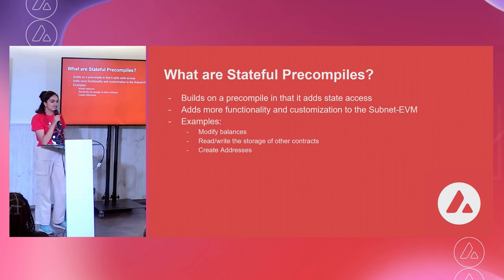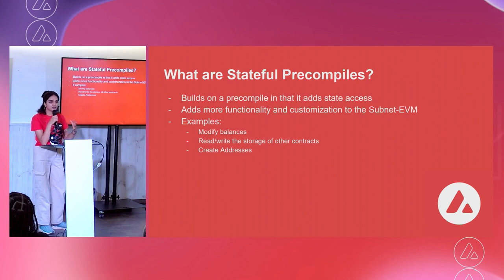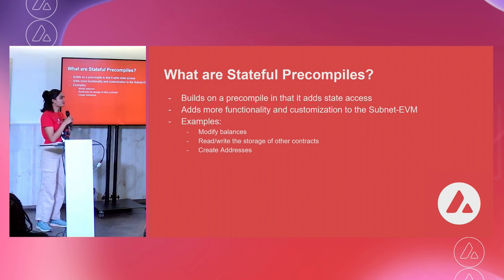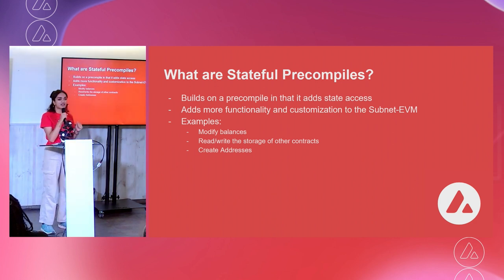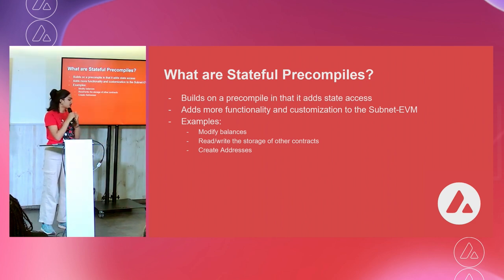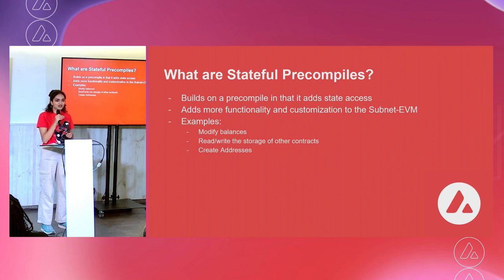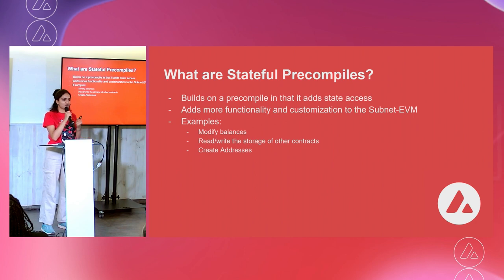Now let's talk about stateful precompiles. These are available in the subnet EVM. They build on a precompile in that they add state access — you can modify EVM state. This allows you to add more functionality and customization to the subnet EVM. What can you do? You can modify balances, nonces, account storage, and create addresses. This unlocks a lot more potential for customization of your own blockchain.